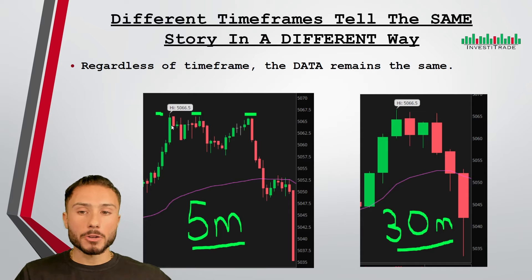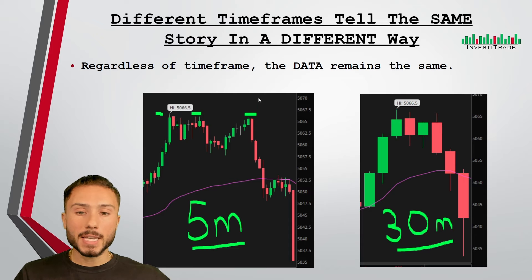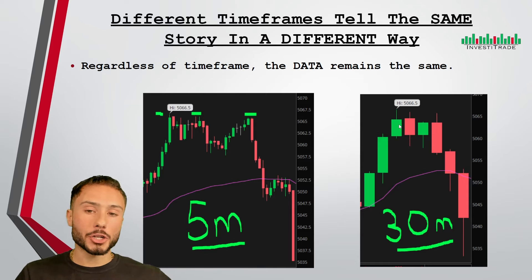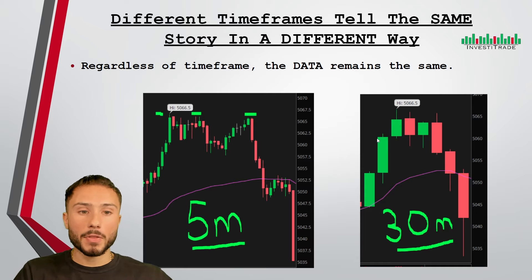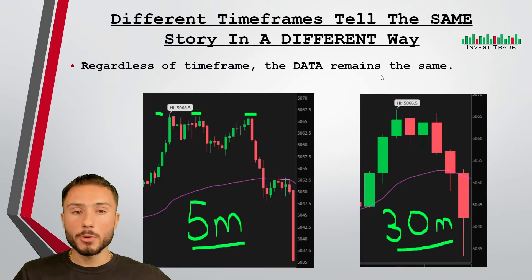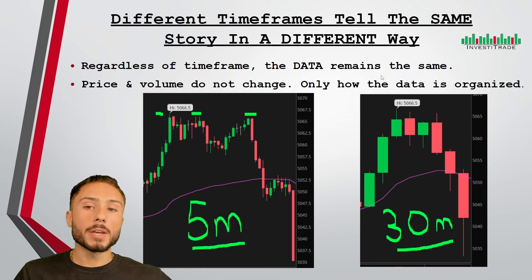Here we have a five minute chart and we can see a clear rejection, noted by these green lines, of three different attempts prior to a long extended drop to the downside. To the right side is the same exact chart, however on each 30 minute candle it's going to show us six five minute candles. The charts are different but the data is the same — on the 30 minute chart we can see three different candles that also rejected those prices, followed by a very large drop to the downside.